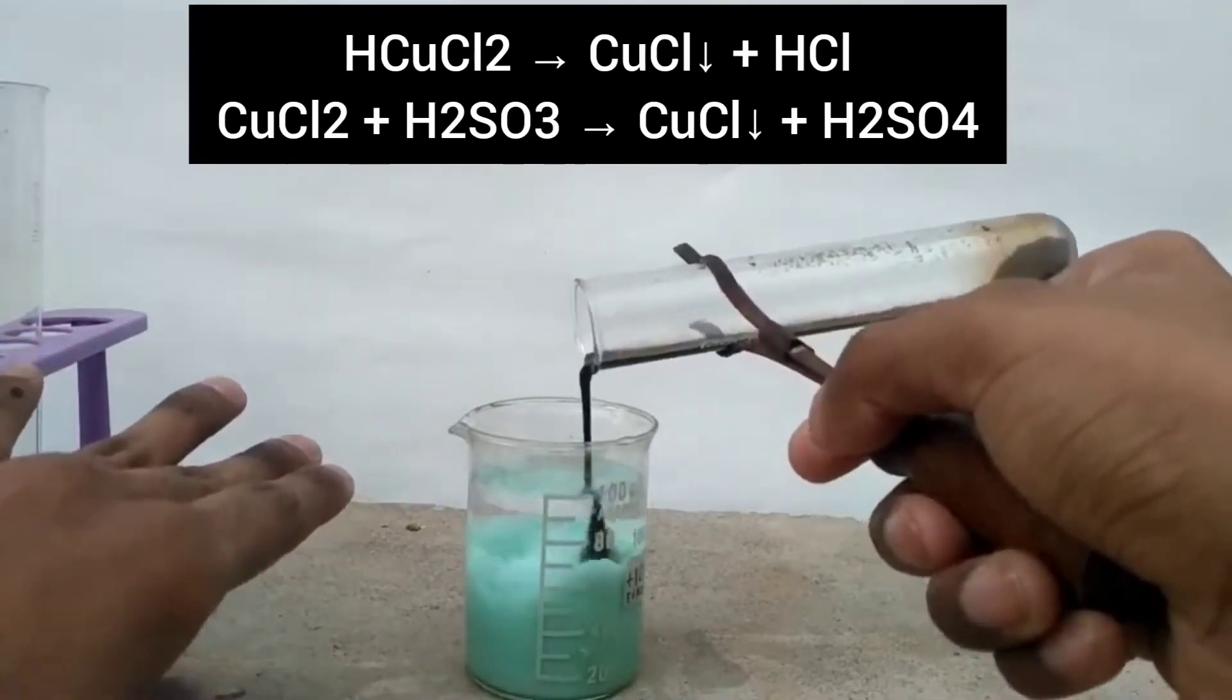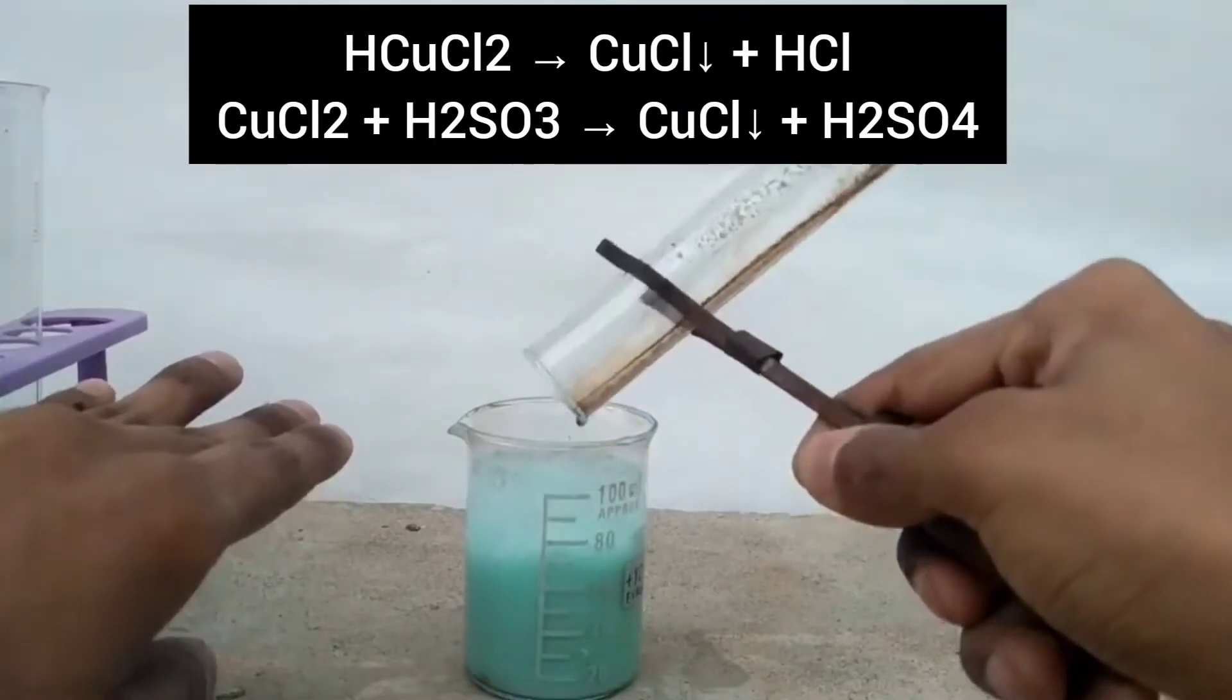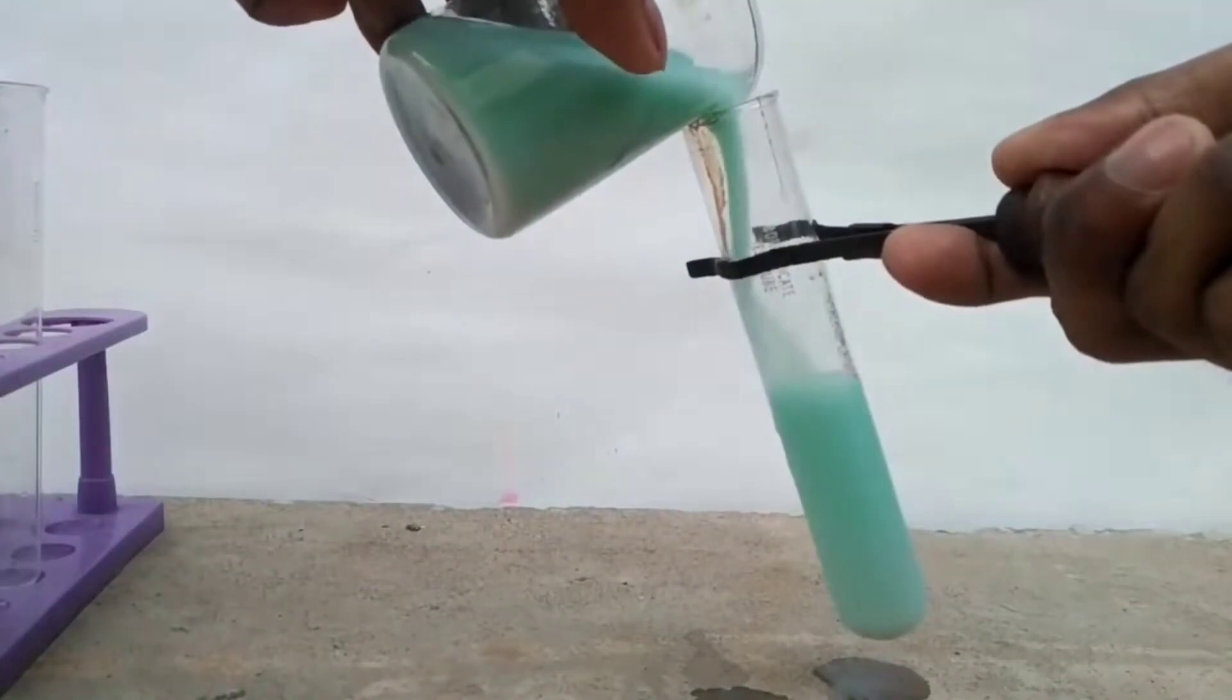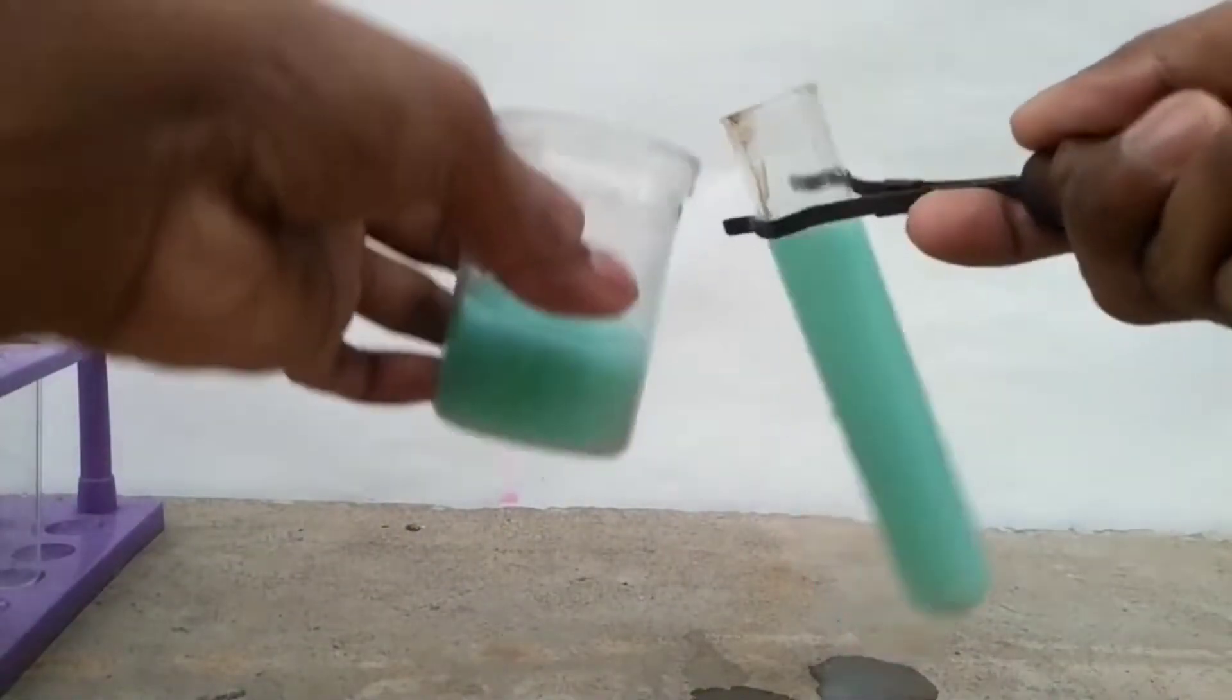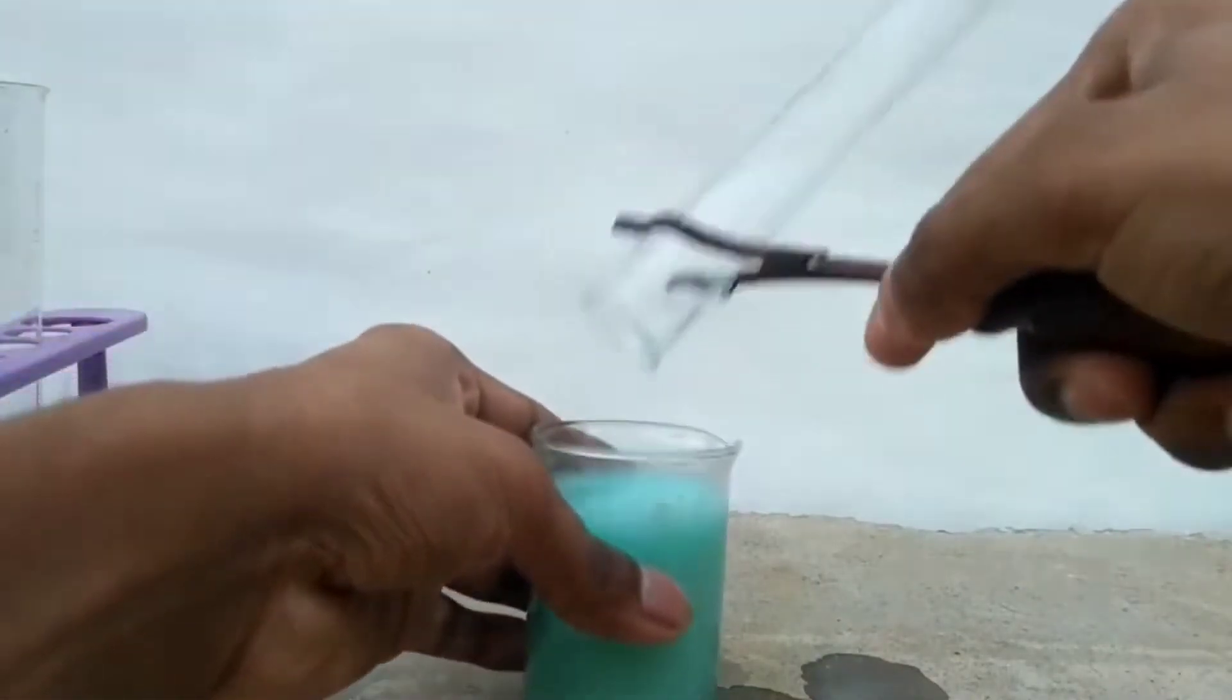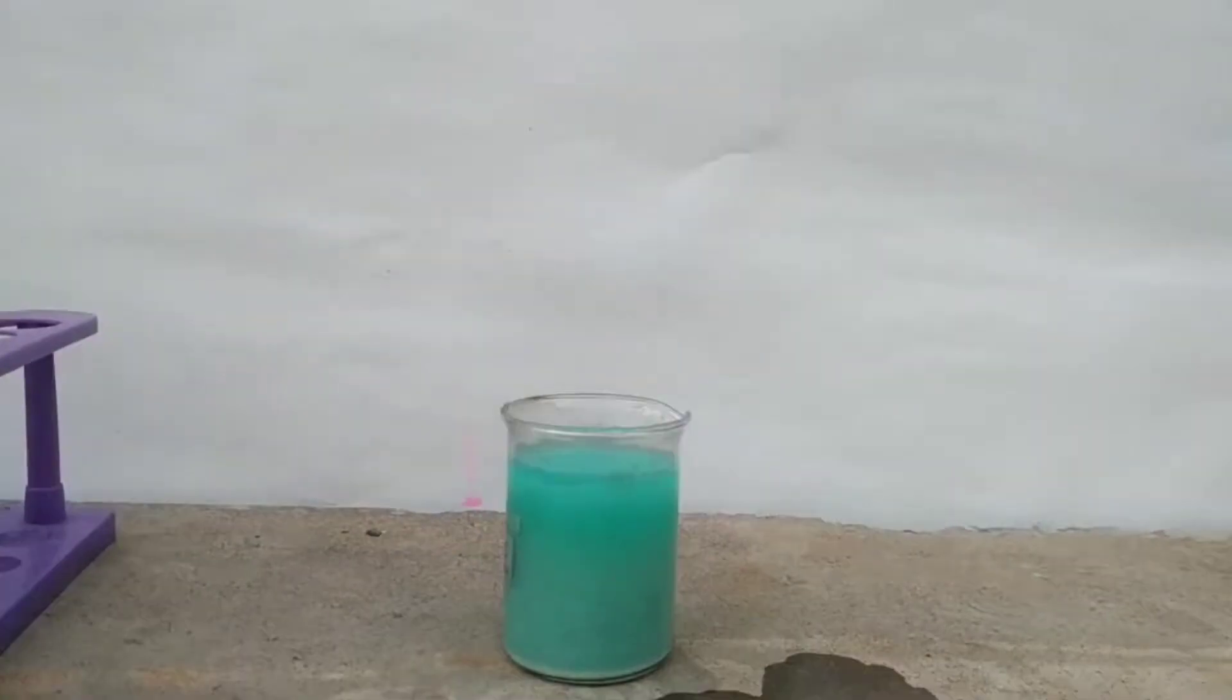On dilution, cuprous chloride gets precipitated. Sulphur dioxide also reacts with some cupric chloride to turn it into cuprous chloride. I accidentally spilled some of the solution but it's okay. You can see that the white precipitate of cuprous chloride is settling down.